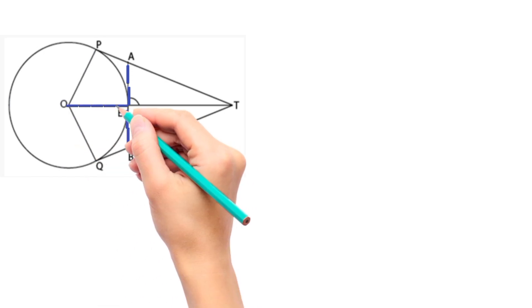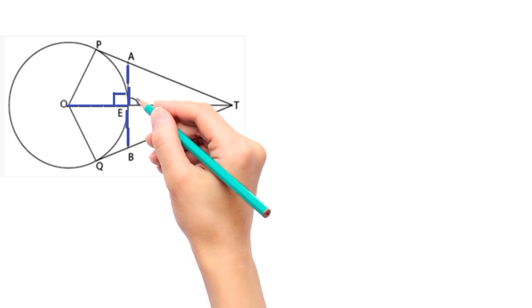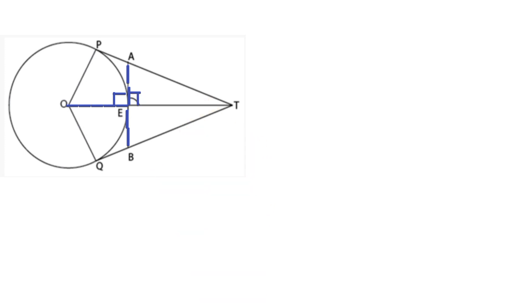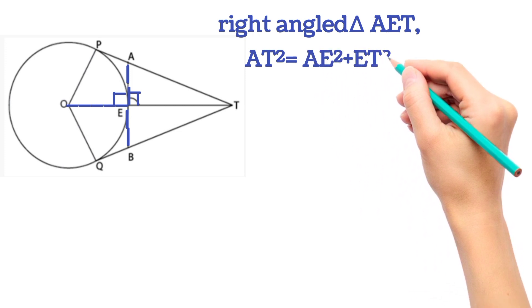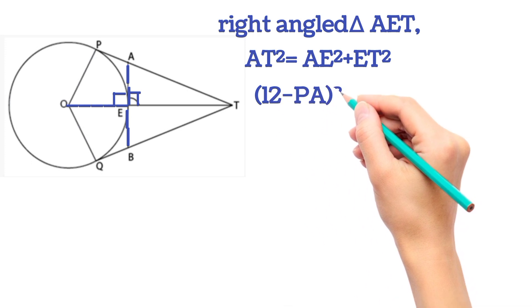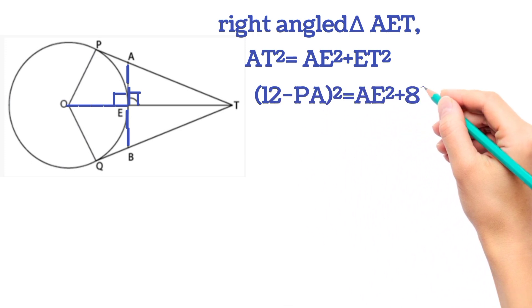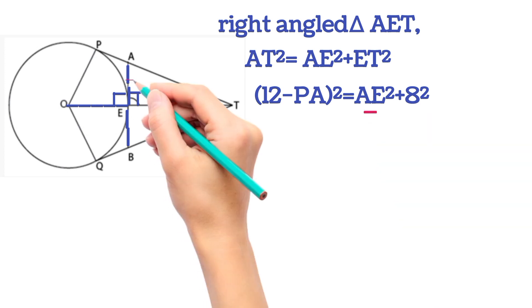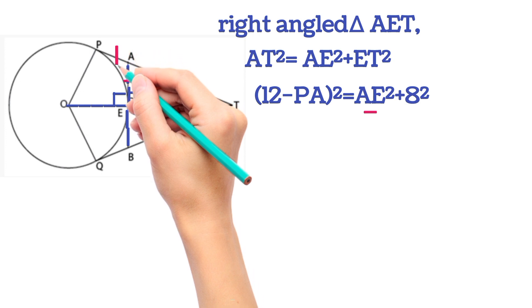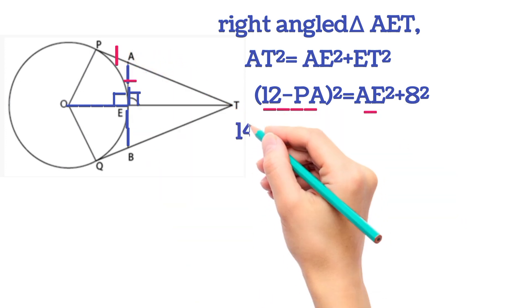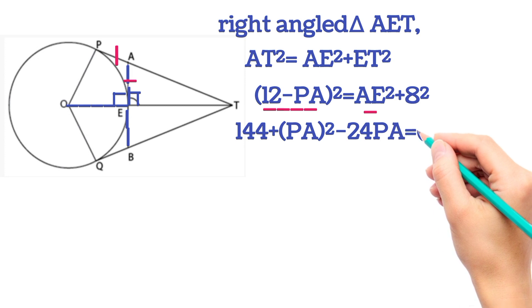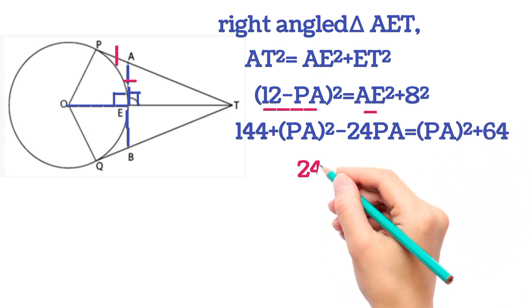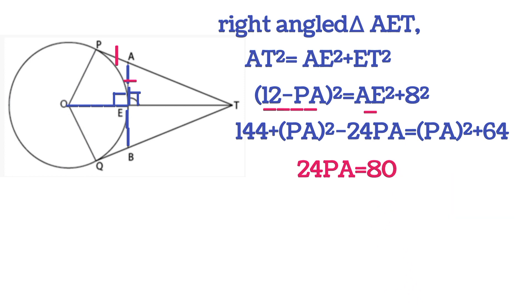AB is tangent to the circle, and the line from the center to the tangent is perpendicular, so the angle at E is 90 degrees. In right angle triangle AET, by Pythagoras theorem: AT² = AE² + ET². AT = 12 minus PA, so (12 minus PA)² = AE² + 8². Since AE = PA, expanding: 144 + PA² minus 24·PA = PA² + 64.